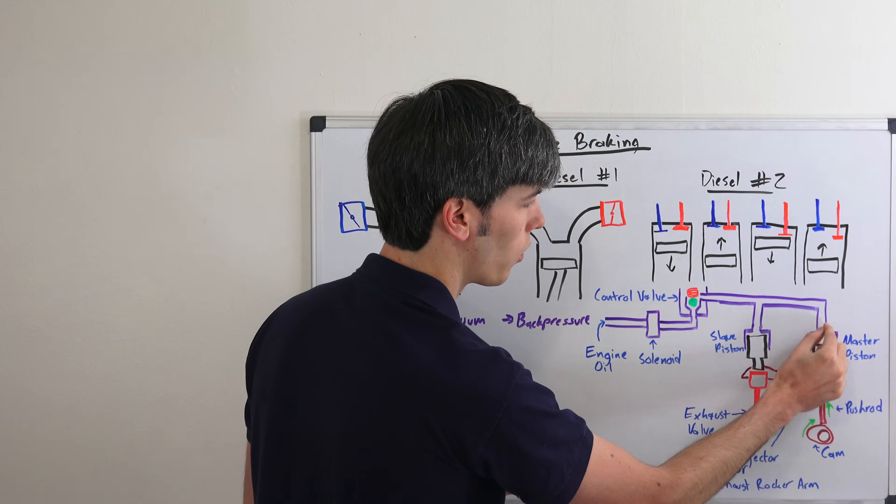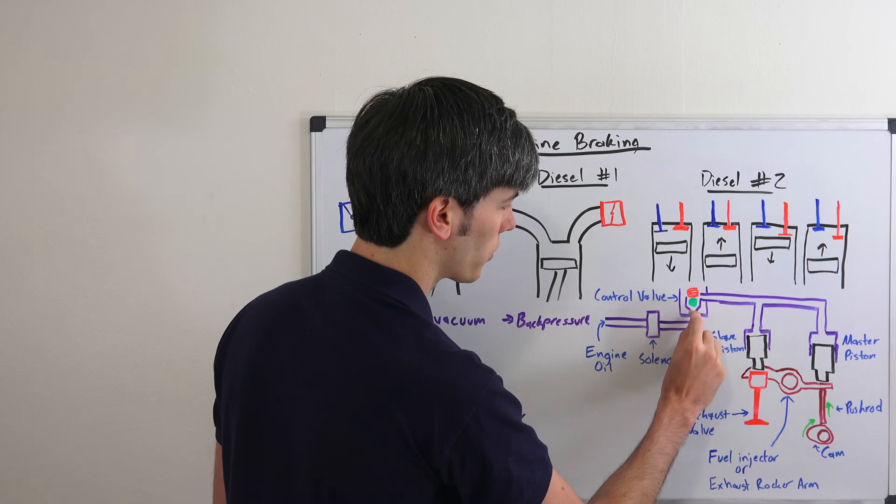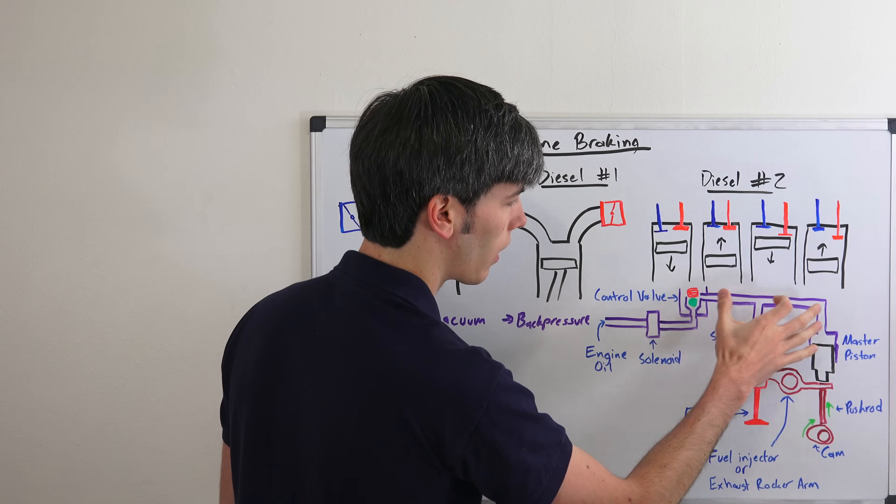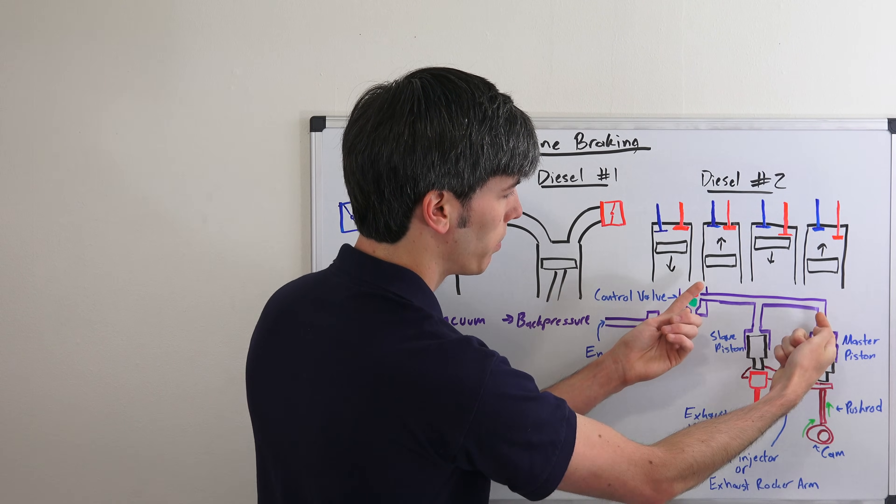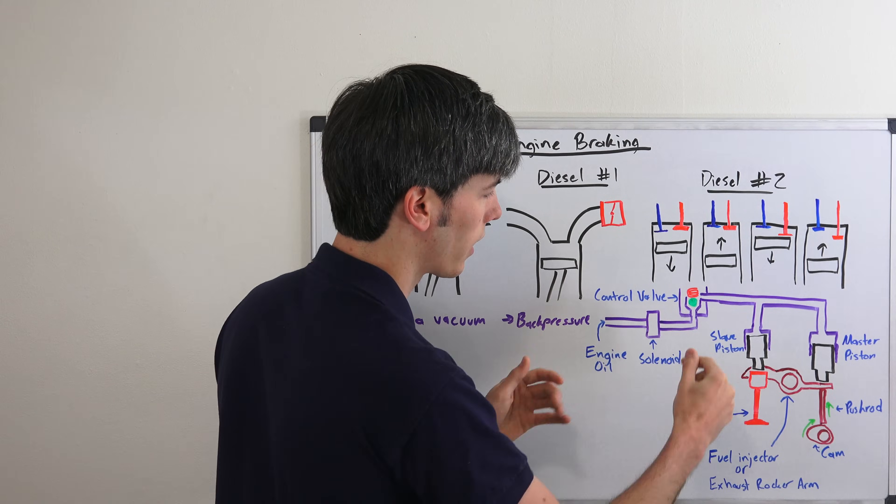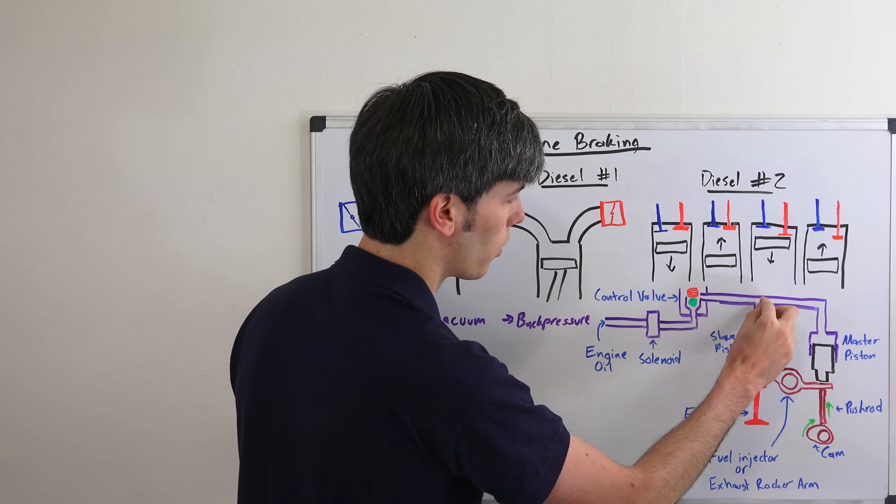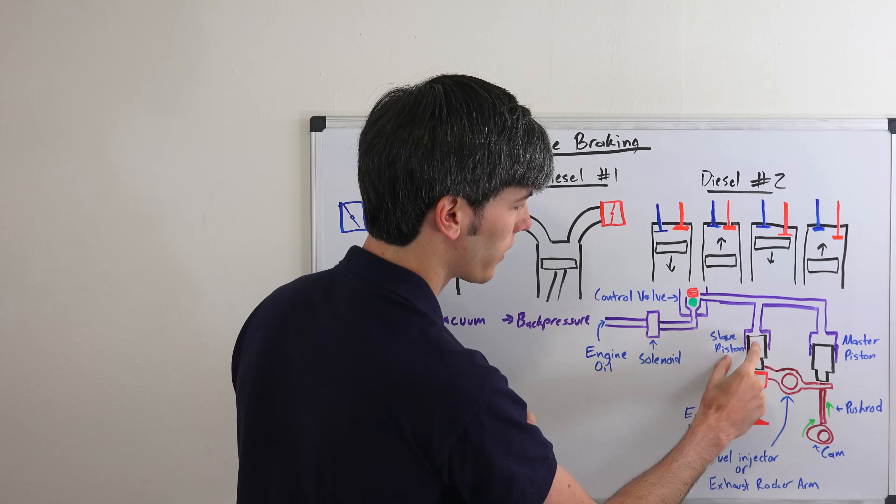That's going to push this oil in here back. And so as it pushes that oil back this ball right here is going to come down and close off. So now you've got a closed system. You've got pressure built up in here. You can't push this cam down. That's a hard contact right there and you can't push any flow through this. So the only way the oil pressure can move is by moving this slave piston down.